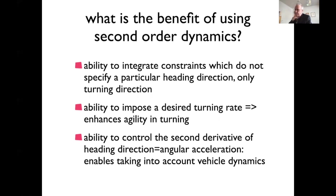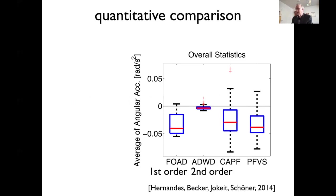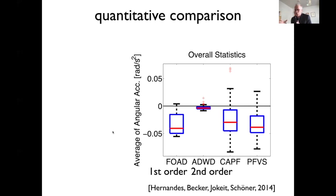We demonstrated that this approach has advantages. In a project with a visitor from Brazil, published in a small paper, we compared different approaches looking at the temporal average of angular acceleration in a particular obstacle course. The goal was an approach that doesn't do radical maneuvers all the time, since maneuvers cost energy — motivated by thinking about drones. The omega-level attractor dynamics approach is compared against the regular attractor dynamics approach.